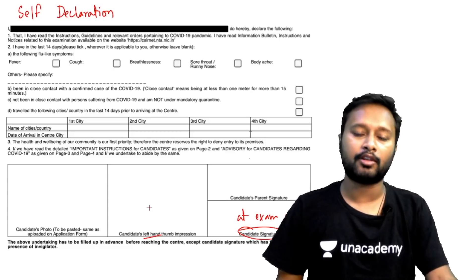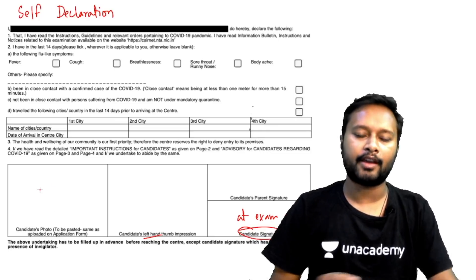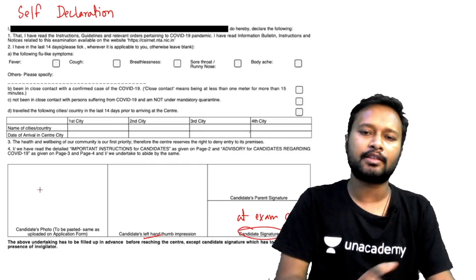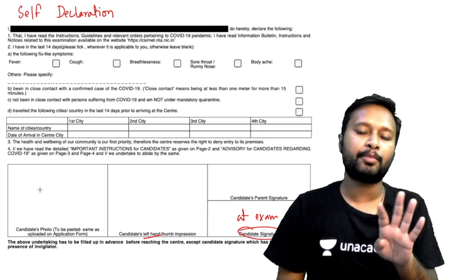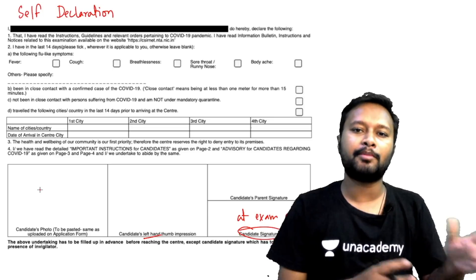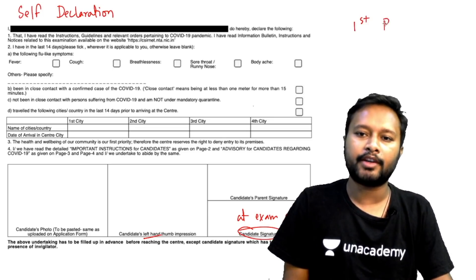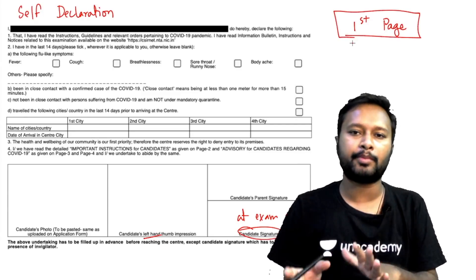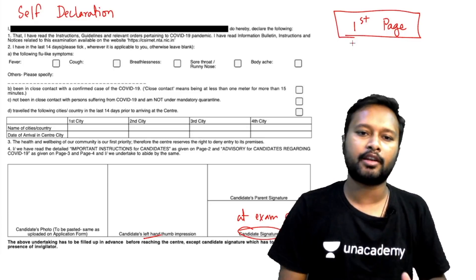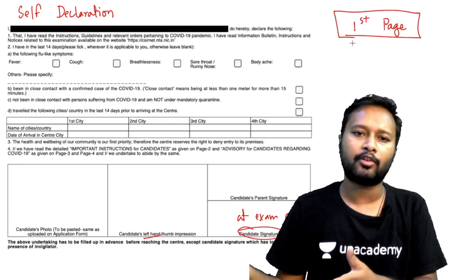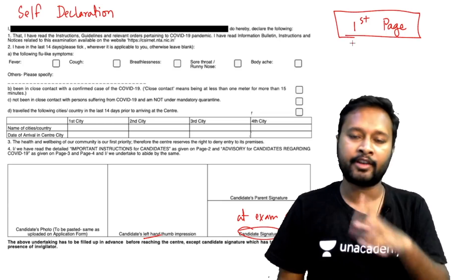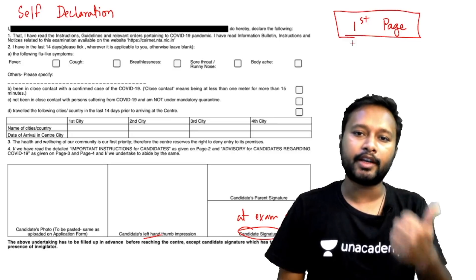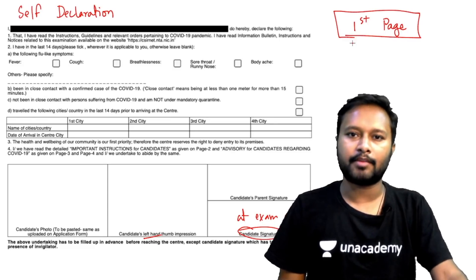Your photograph has already been discussed. For the rest of the admit card, there are four pages, but only the first page is mandatory. If you have taken a printout of the first page, that is well and enough. You will not be asked to take a printout of all pages. The first page contains all the undertaking and your information — that is enough for your examination.